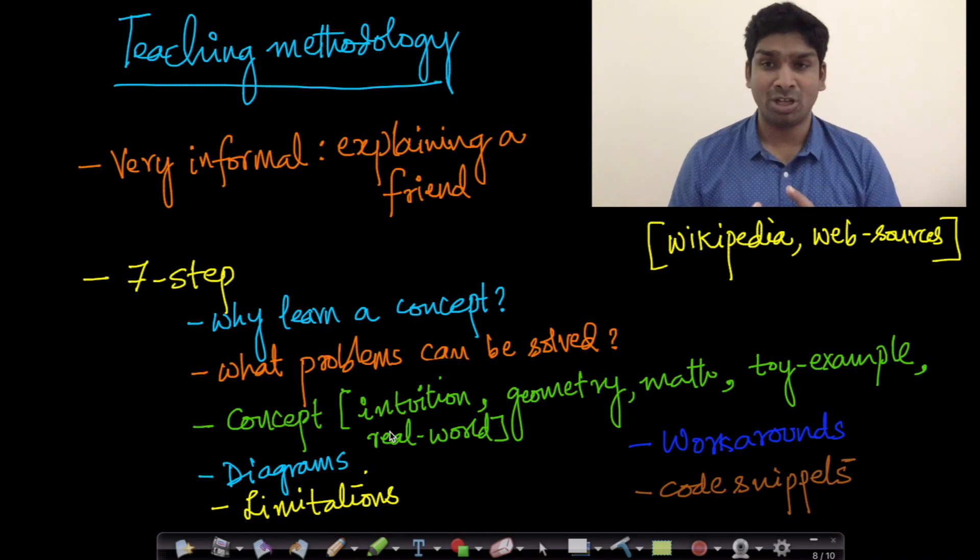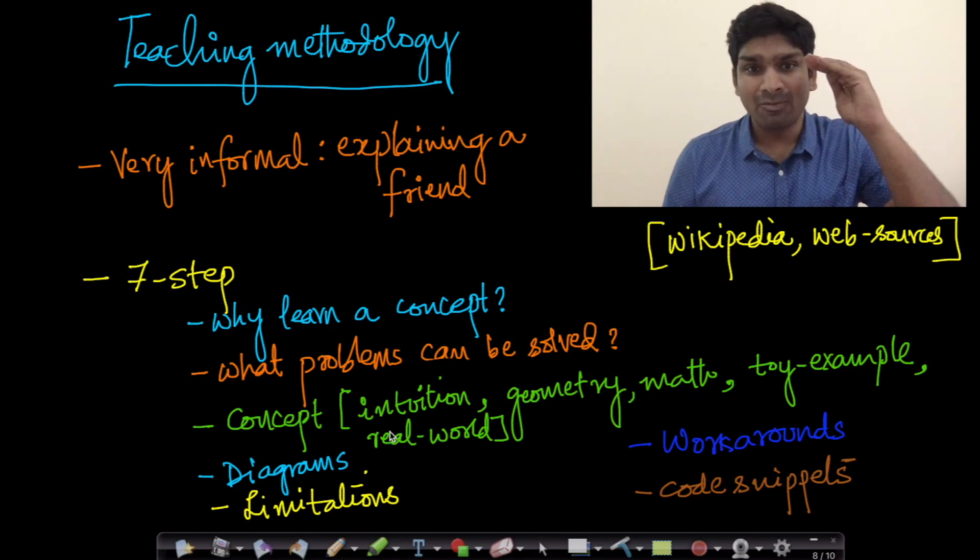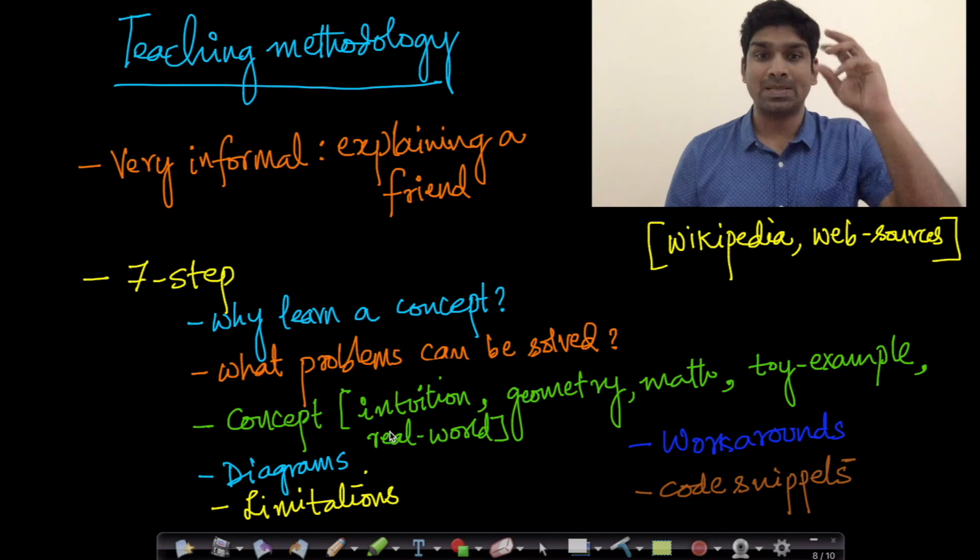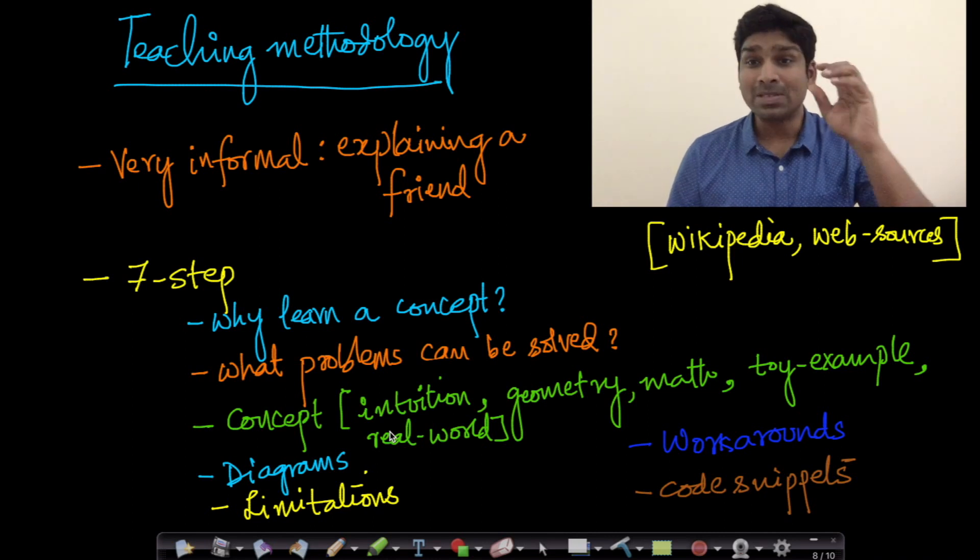We have something called a 7-step methodology, which we've written as a simple process so that we cover all the topics, all the aspects of the concept. First, we explain why to learn a concept. Why is this concept important? Next, we explain what problems can be solved if you understand this concept, because that's important. A lot of times, we learn a concept but we don't know why.